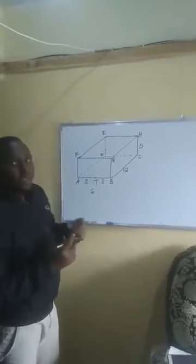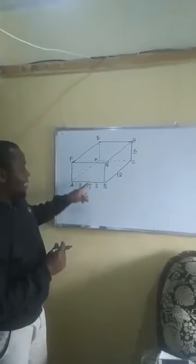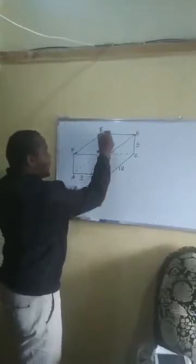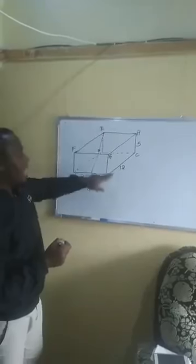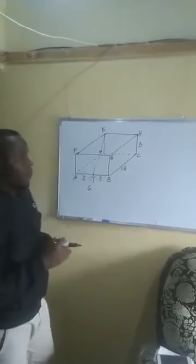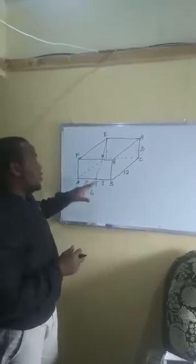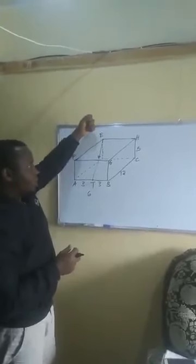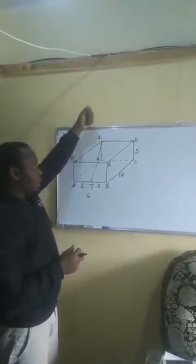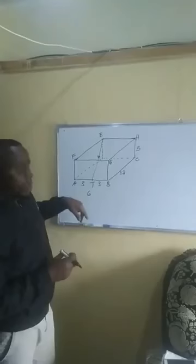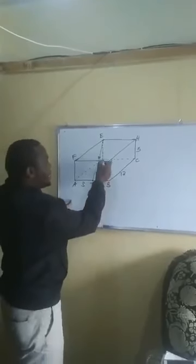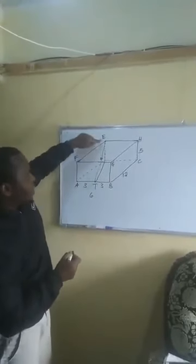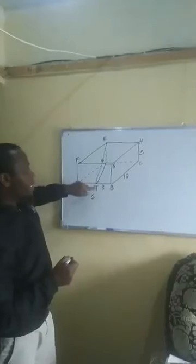I want us to calculate the angle between line TE — from T to point E — and the base. First, we need to get the projection of TE on the base. Using a torch, you light directly above the line, so its shadow is cast on the base, and the line it forms is that projection.